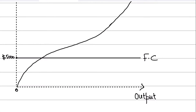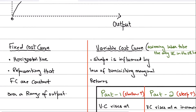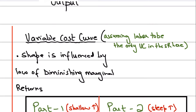Now let's move on to the total variable cost. To keep things simple, I've assumed that labor is the only variable cost in the short run, although there are other variable costs such as raw materials. Just to make the explanation clear, I've assumed labor is the only variable cost the firm is incurring, so that you can understand the concept.